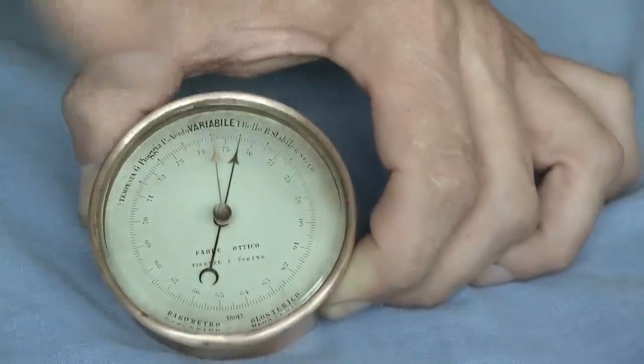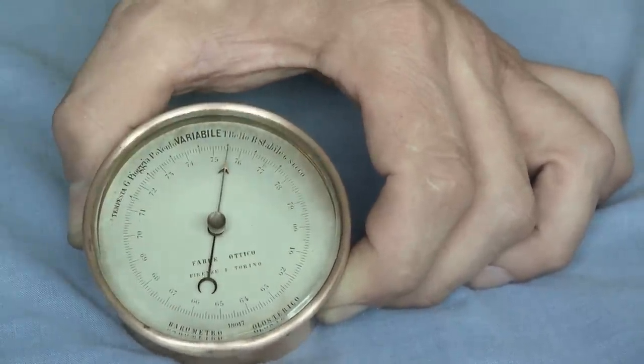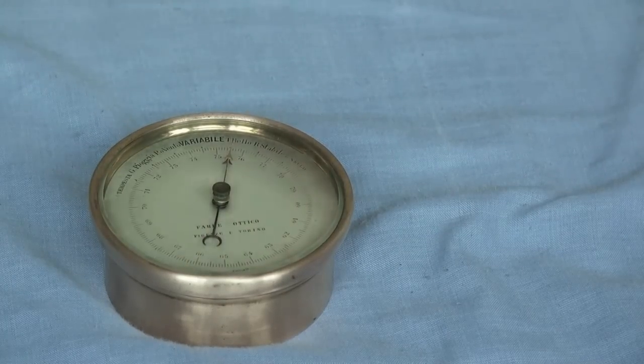You can see the set hand - the little gold hand. Point it to the indicated pressure. You need a clear plastic bag. Place the barometer in the plastic bag and seal in as much air as possible.